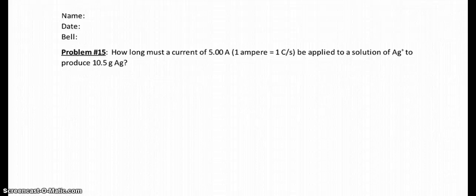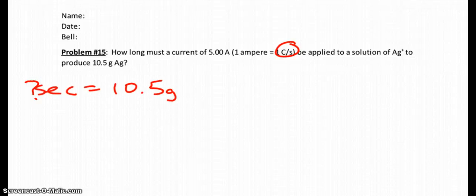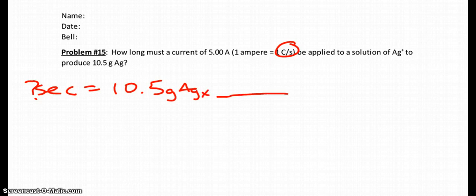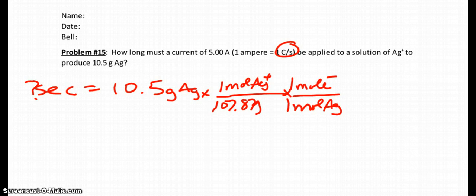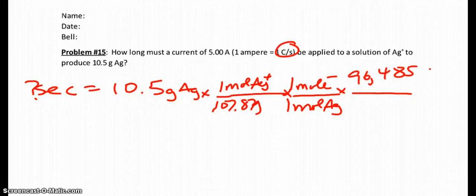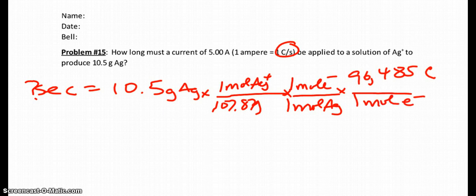So let's check out the next problem. How long must a current of 5.0 amps, and again look at your units of what an ampere is, one coulomb per second, be applied to a solution of silver ions to produce 10.5 grams of silver? So again, what are we looking for? We're looking for time. And this is in seconds. So I'm going to ask myself how many seconds will it take to produce that many grams of silver? And as you know, we can go grams, appear at the periodic table, and look up the mass of silver. And I believe it is 107.87 grams are in one mole of silver. Well I need to get to something to do with moles of electrons, don't I? So one mole of silver ion produces one mole of electrons. And then what was a Faraday? If you remember a Faraday, it was 96,485 coulombs per one mole of electrons.